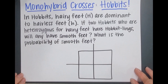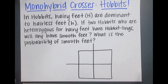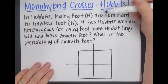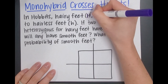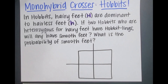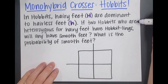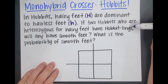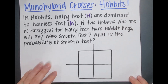We are talking about hobbits. If you've never seen Lord of the Rings or read the books, this will be kind of strange — hobbits are fictional creatures. In hobbits, hairy feet are dominant, that's the big H, and hairless feet are recessive, the little h. So if two hobbits who are heterozygous for hairy feet have little hobbitlings, will any have smooth or hairless feet? What is the probability of having hairless feet?